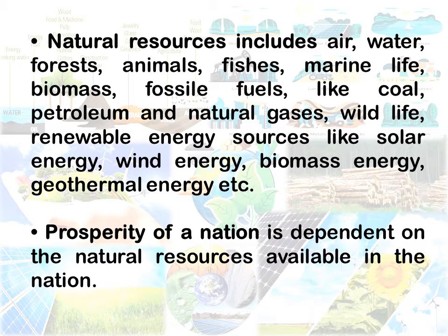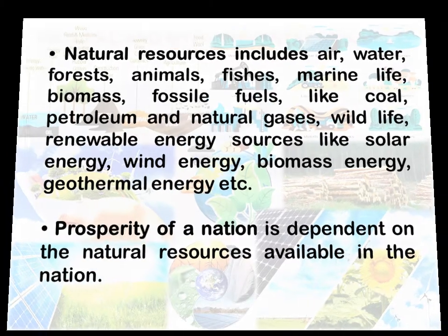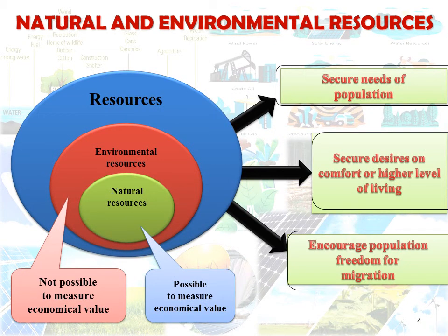We say that America is highly prosperous — why? Because there are abundant natural resources in that country. Now, natural resources and environmental resources: resources are divided into two types — environmental resources and natural resources. Environmental resources are not possible to measure in economic value, but in the case of natural resources we can measure the economic value.